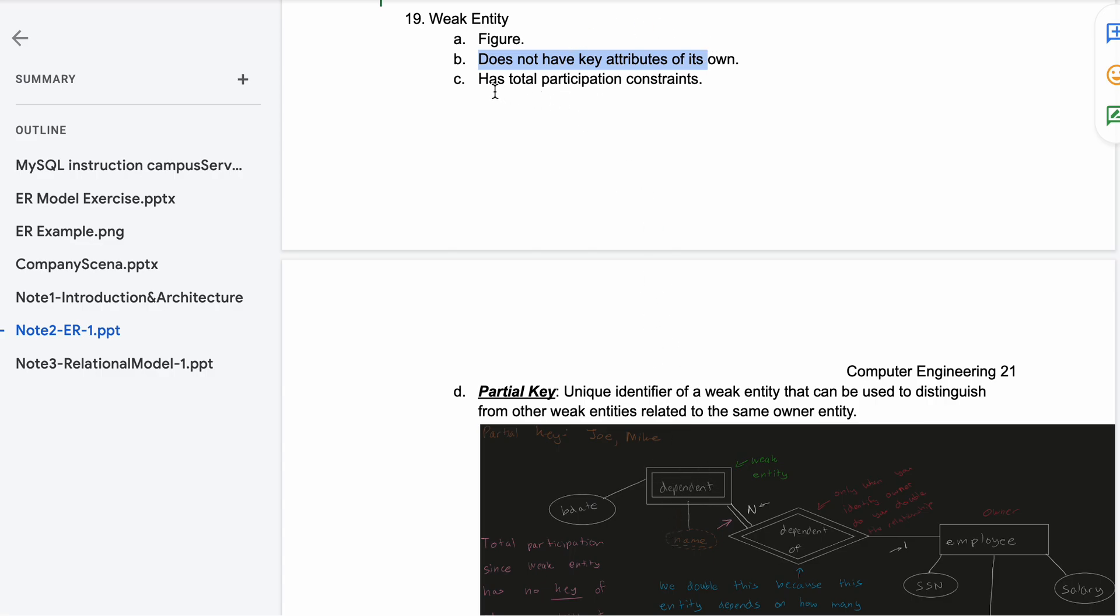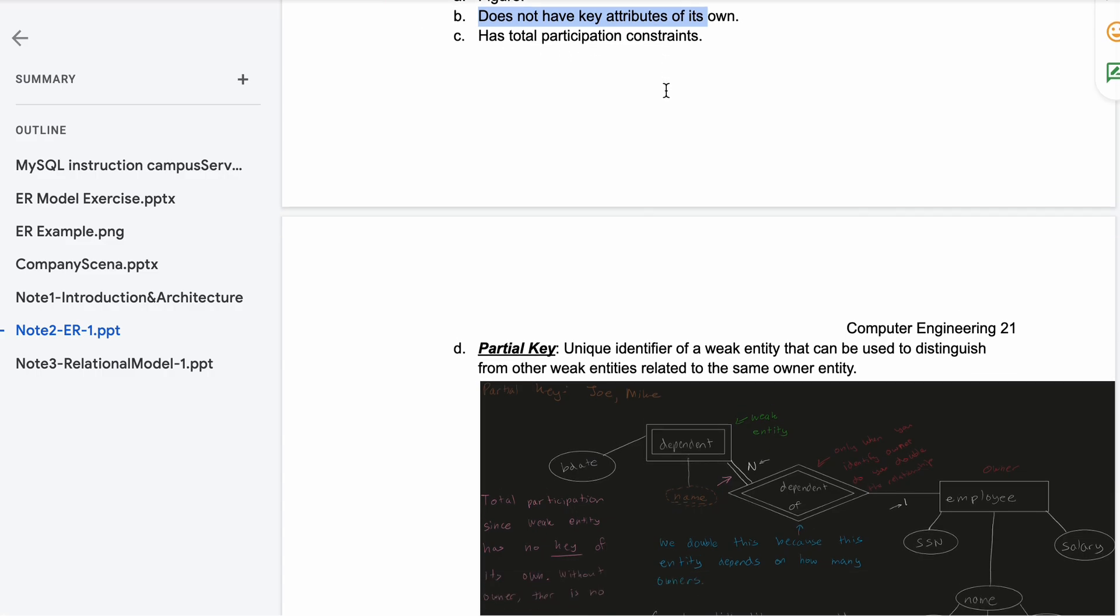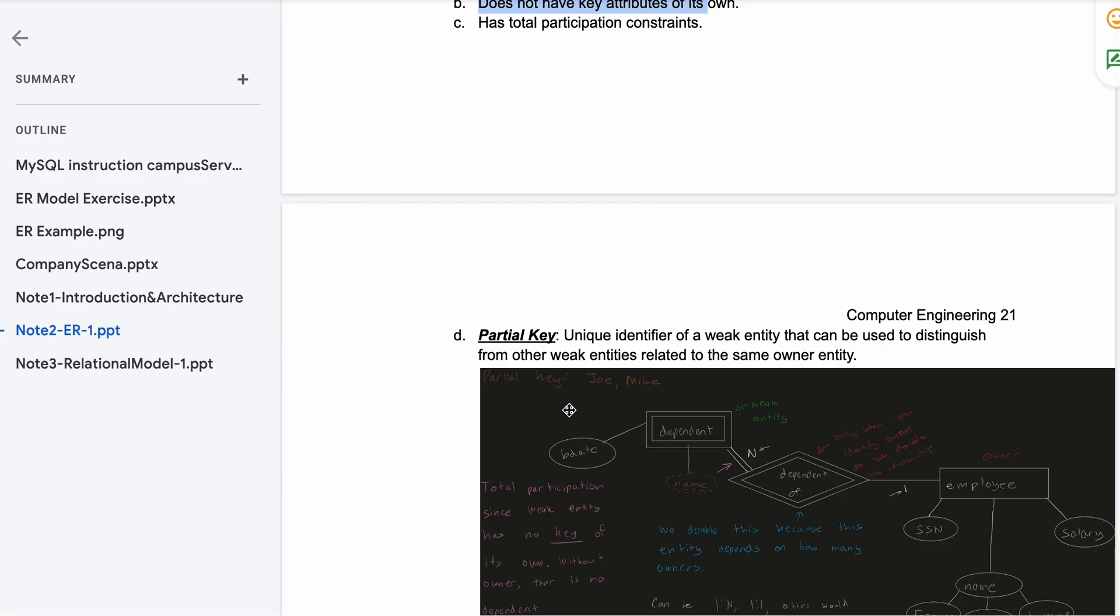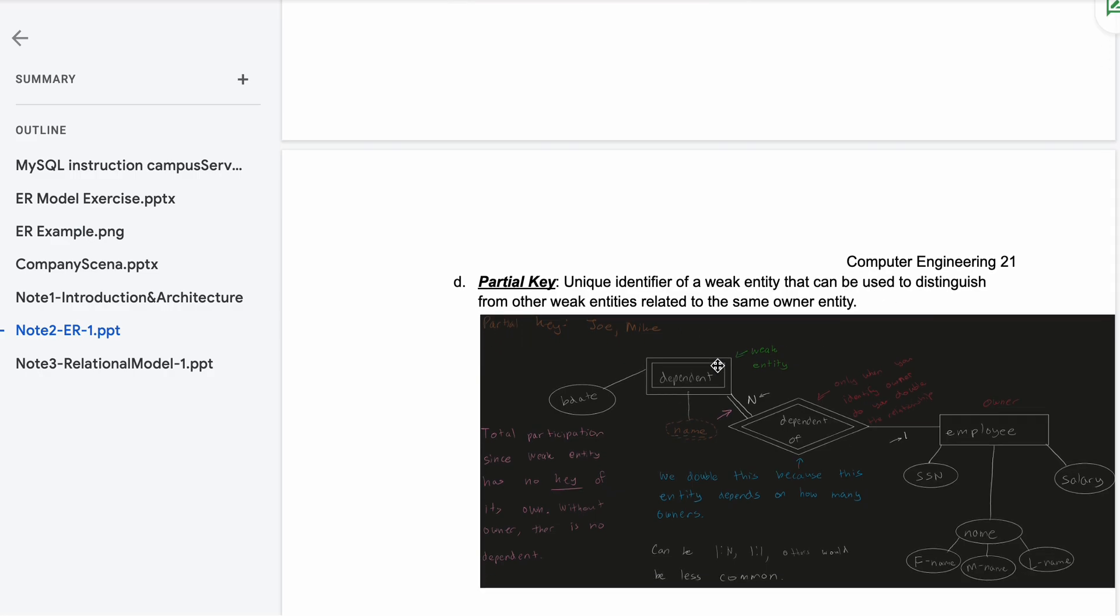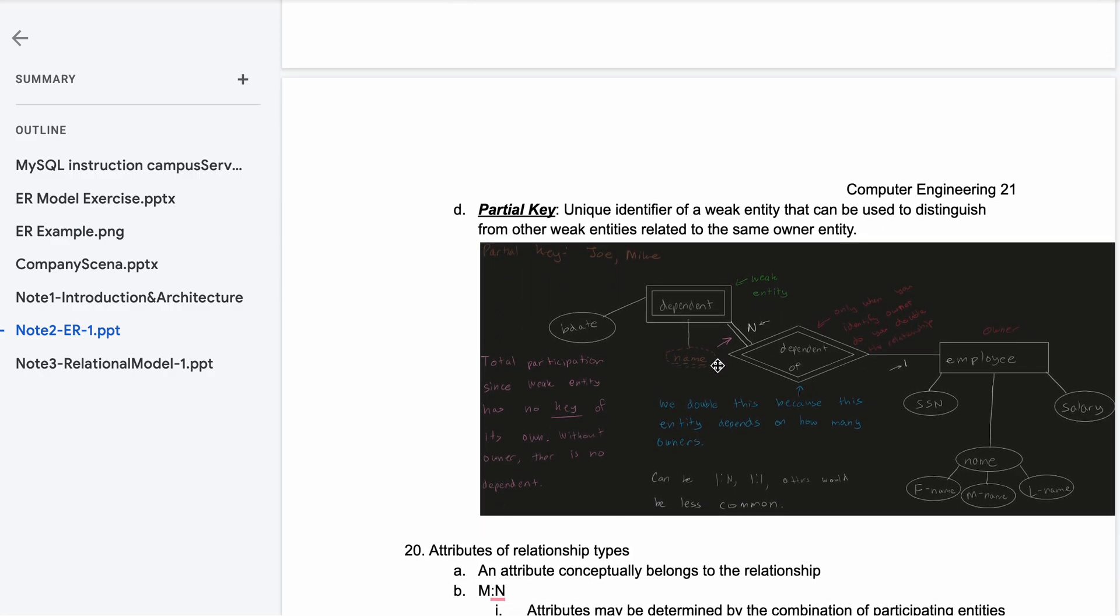It has two participating constraints as well. It uses partial key, and partial key is a unique identifier of a weak entity that can be used to distinguish from other weak entities related to the same owner entity.